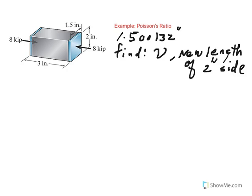We are also given that the modulus of elasticity of this block is 10,000 KSI or 10 million PSI. This is basically an aluminum block. The 10,000 KSI or 10 million PSI is the modulus of elasticity of aluminum.